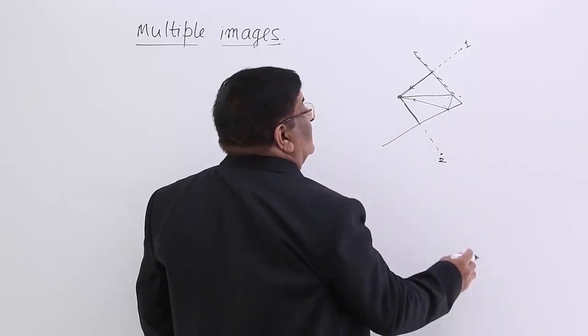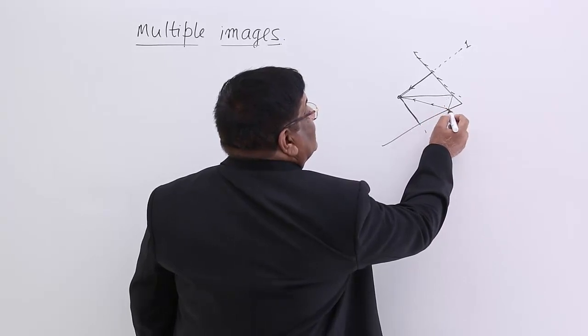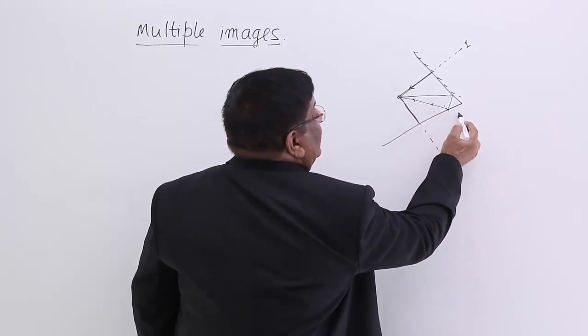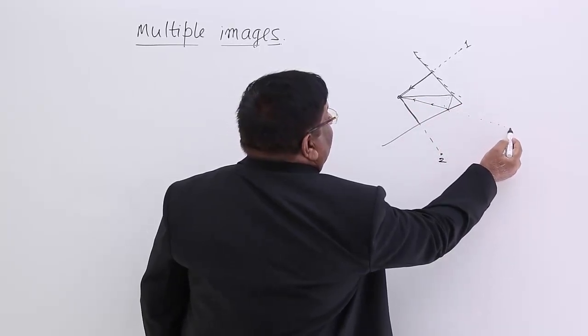If it happens like this, then we see an image in this line. Where is that image? How much is this distance? This distance you add up here and you see an image here.